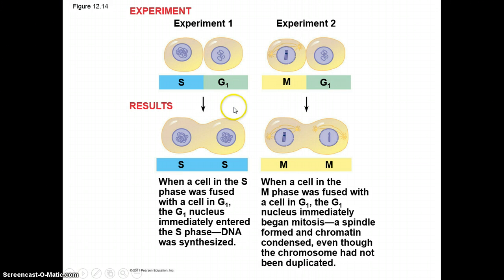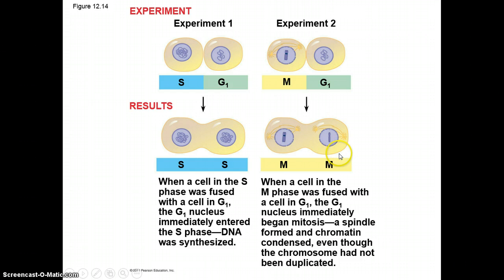In the first experiment, when a cell in S phase was fused with a cell in G1, the G1 nucleus immediately entered S phase and DNA was synthesized. In the second experiment, when a cell in M phase was fused with a cell in G1, the G1 nucleus immediately began mitosis — a spindle formed, chromatin condensed — even though the chromosome had not been duplicated. This indicates that certain regulators within the cytoplasm are present at certain times and have a stronger or more amplified effect than others.